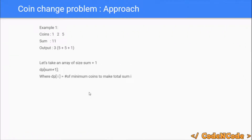So this is our approach. We are going to take a dp array of size sum plus 1, so that we have all indices from 1 to sum. dp[i] would indicate the minimum number of coins to make a total sum i. For example, dp[10] tells you the minimum number of coins required to make total sum 10. So the result would be dp[sum]. This is a one-dimensional dp and we are going to solve this problem iteratively.